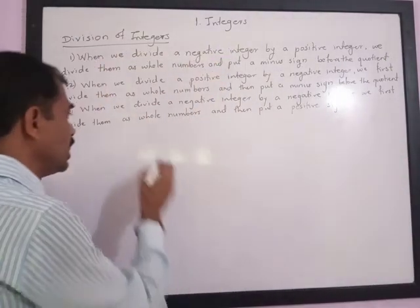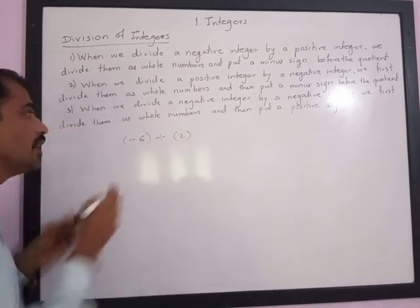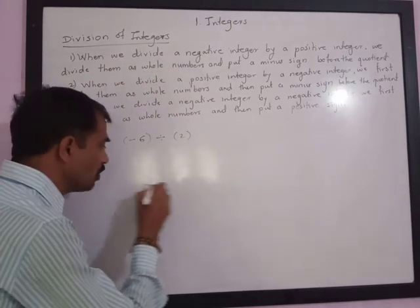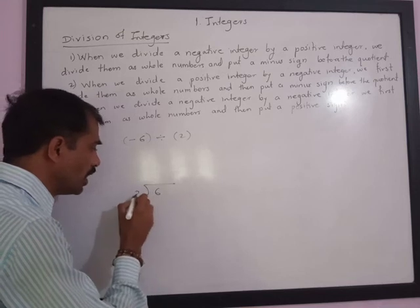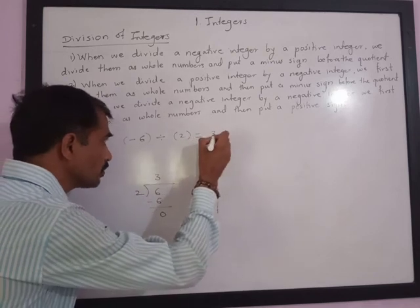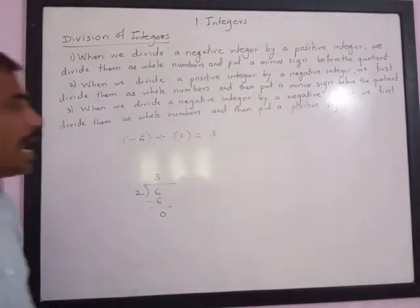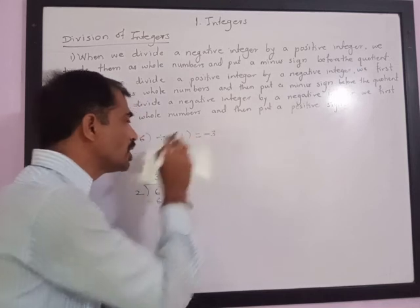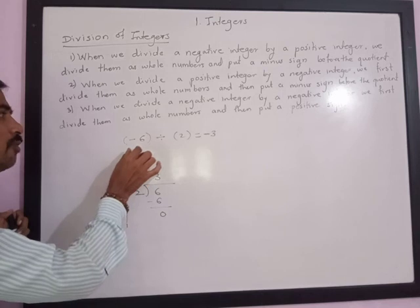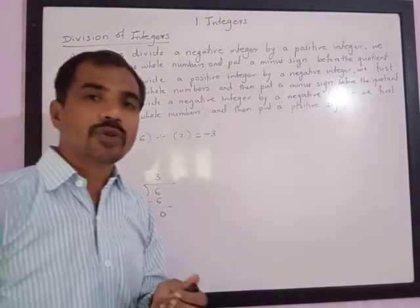When dividing a negative integer by a positive integer — for example, negative 6 divided by positive 2 — we divide as whole numbers ignoring the sign: 6 divided by 2 gives quotient 3. Then we put a minus sign before the quotient, giving negative 3. This is the first rule.